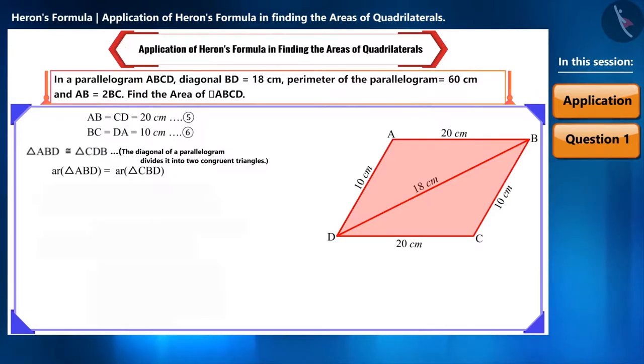If we get the area of any one of these triangles, then we can double it to find the area of the parallelogram. So, let's find the area of triangle ABD using Heron's formula.